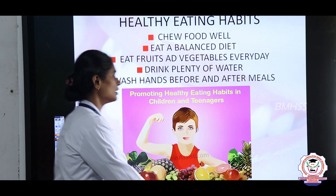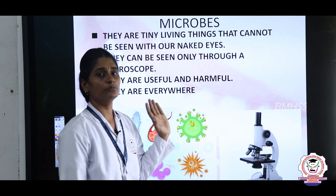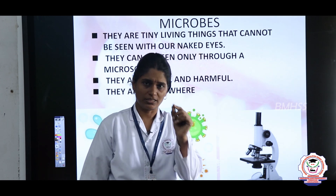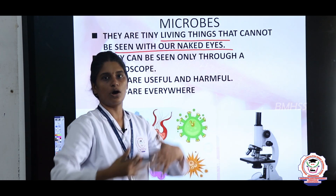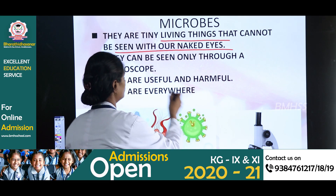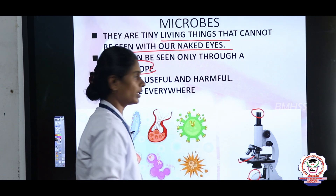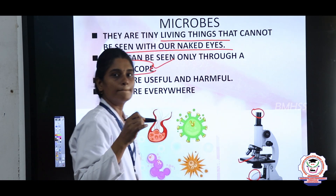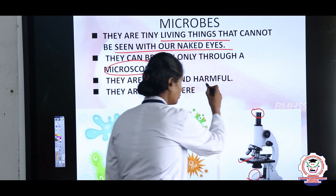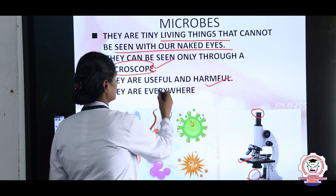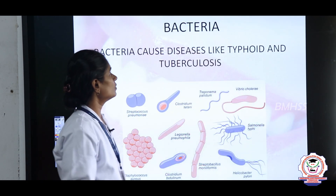Germs are nothing but microbes. Microbes are tiny living things that cannot be seen with the naked eye — they can only be seen under a microscope. The microscope is the instrument used to see microbes. Microbes are present everywhere. Some microbes are very harmful, and some are very useful. There are four types of microbes: bacteria, fungi, virus, and protozoa.